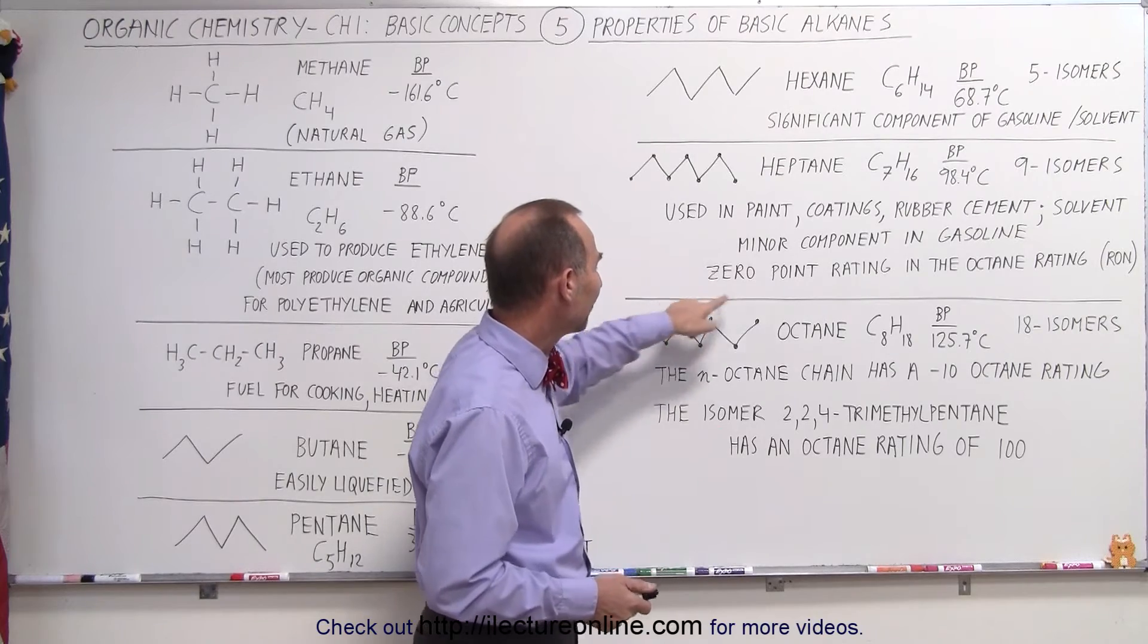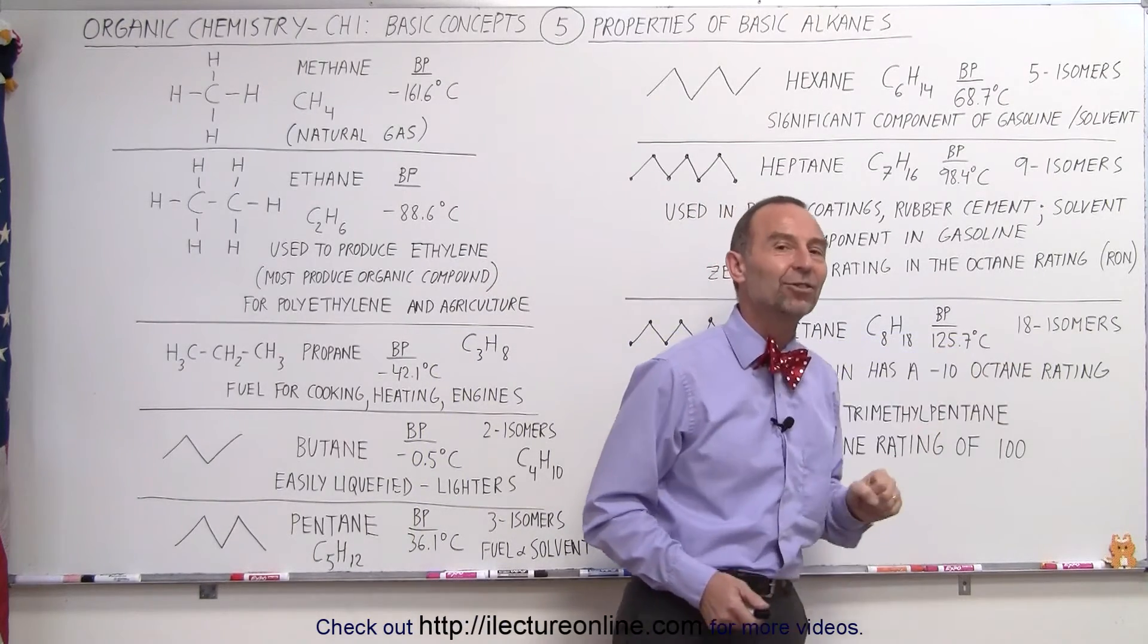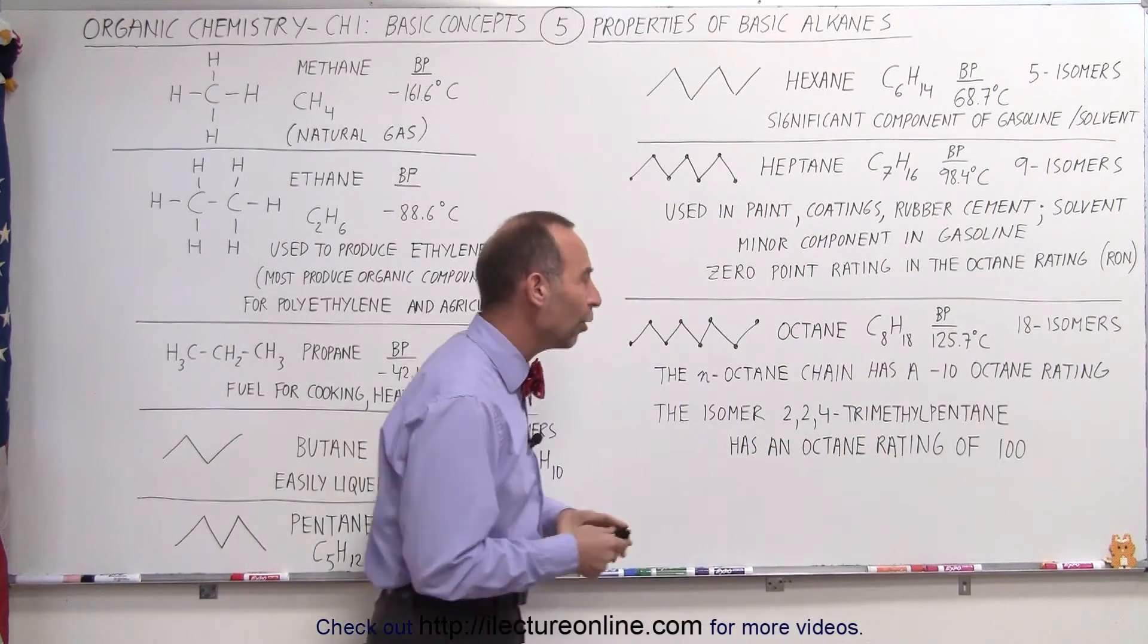Notice because you have eight carbons there's a possibility of 18 isomers and yes we're going to learn how to find all 18 of them.